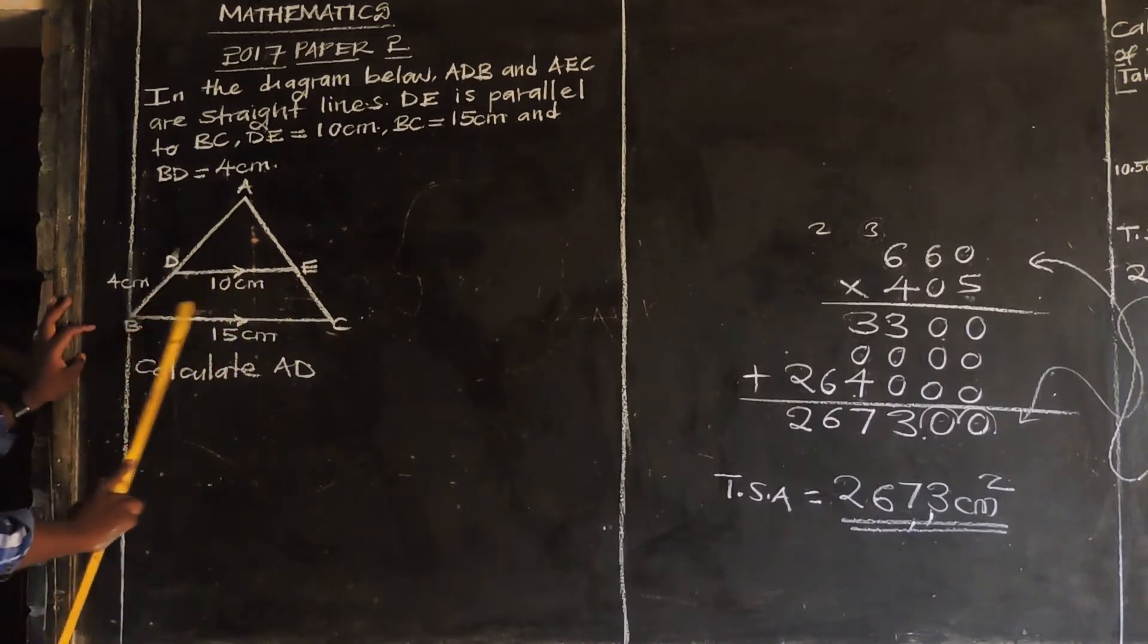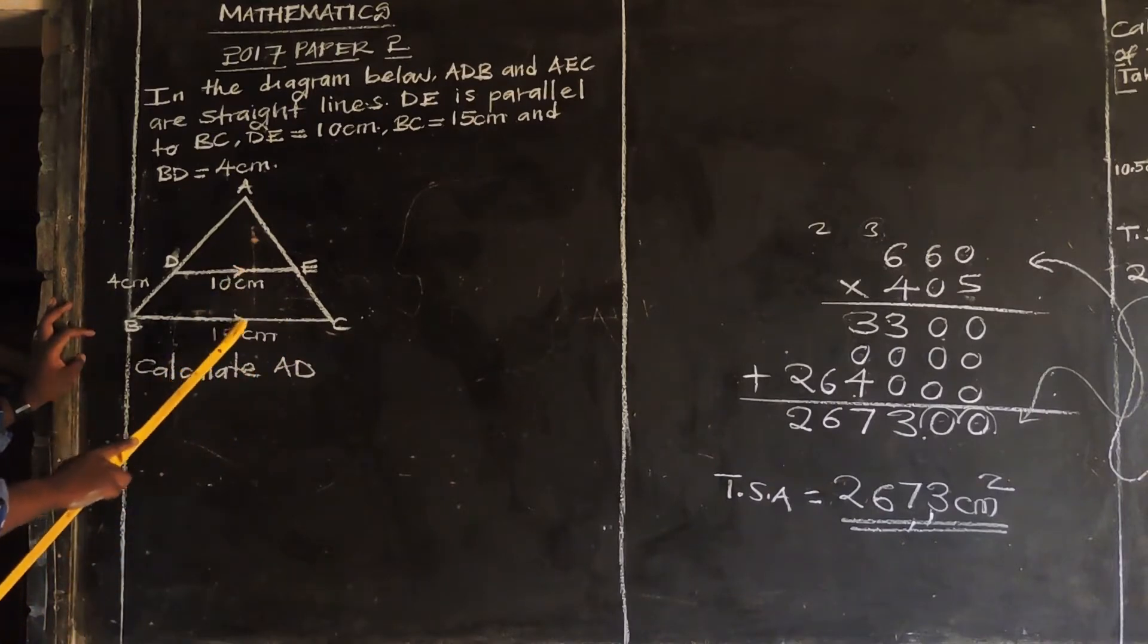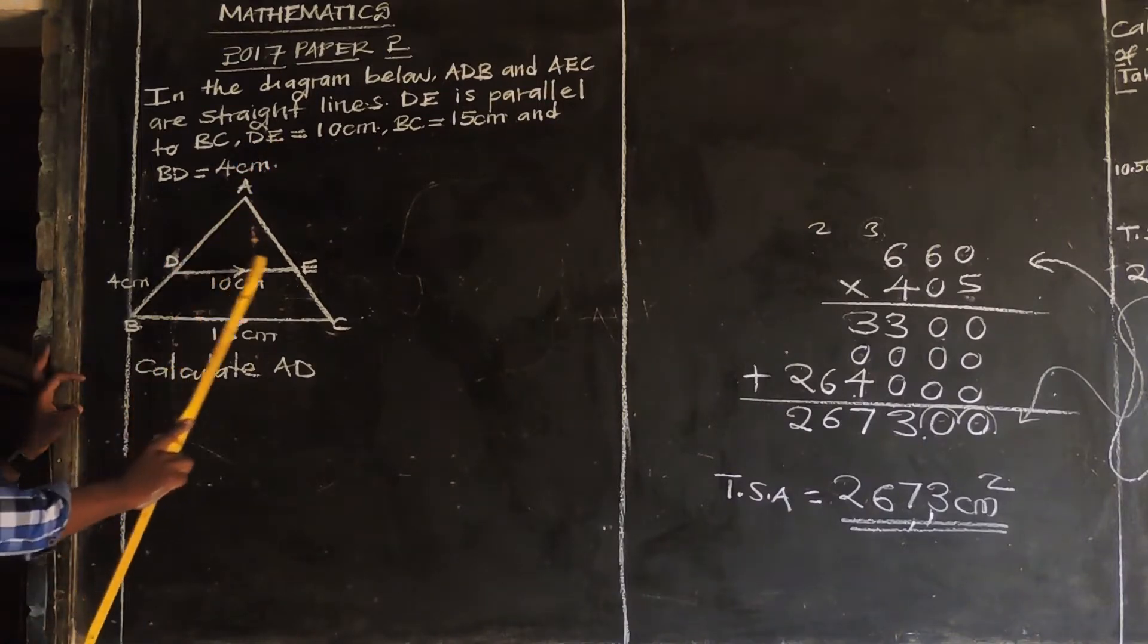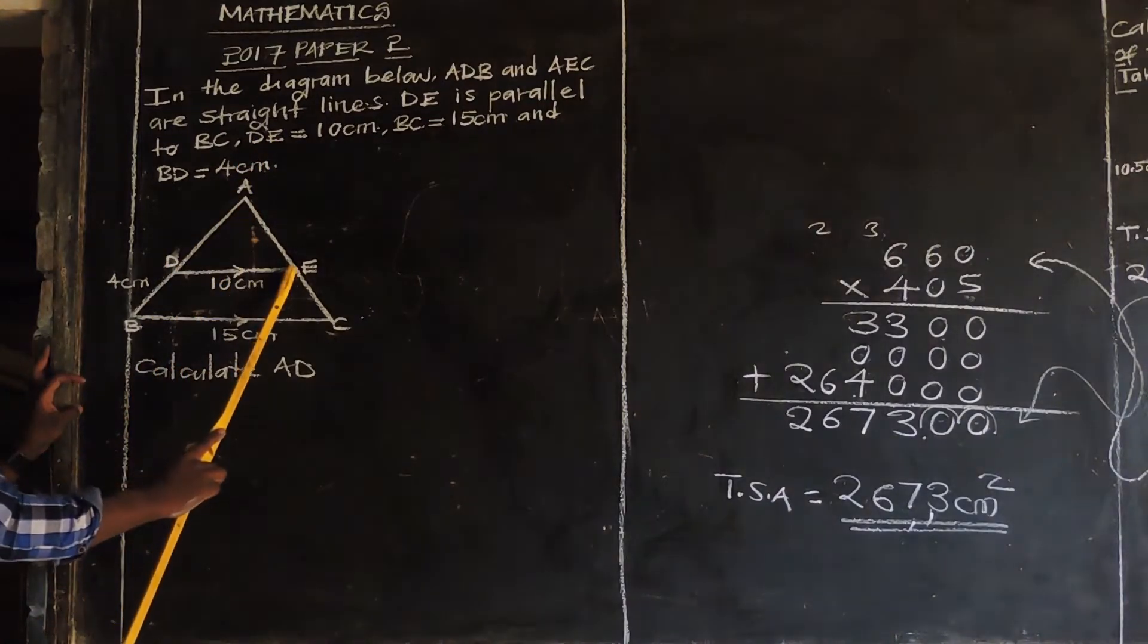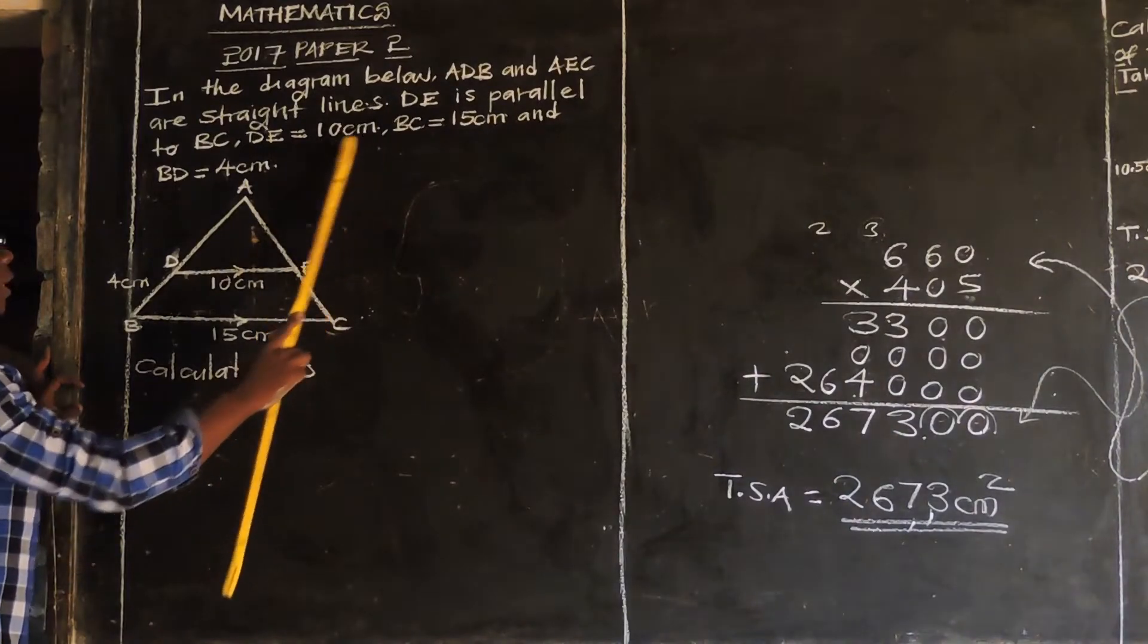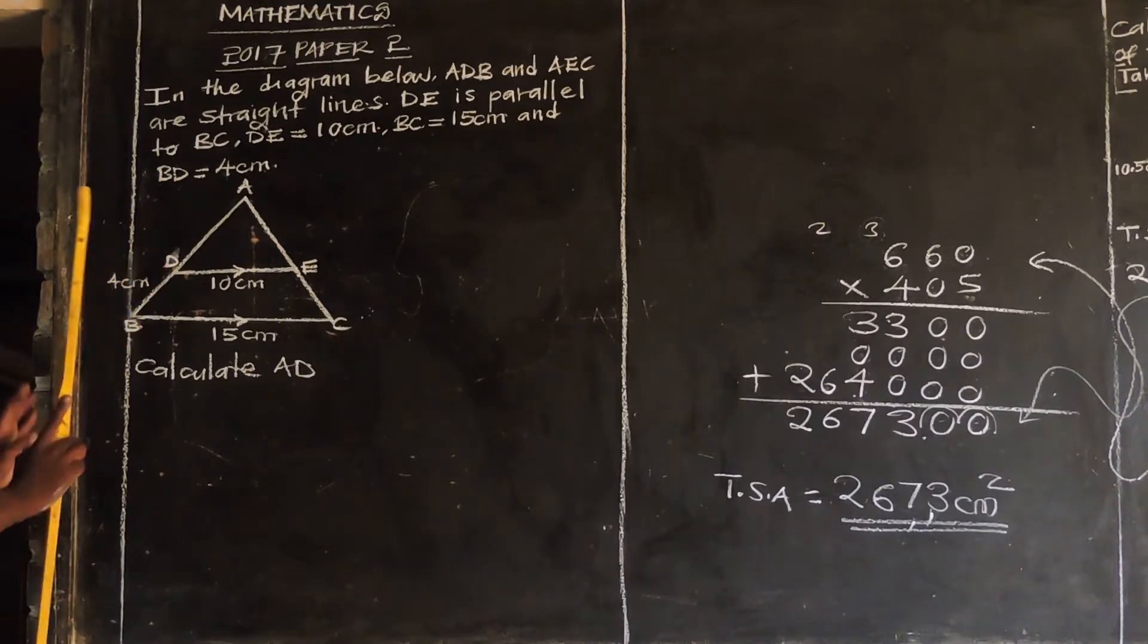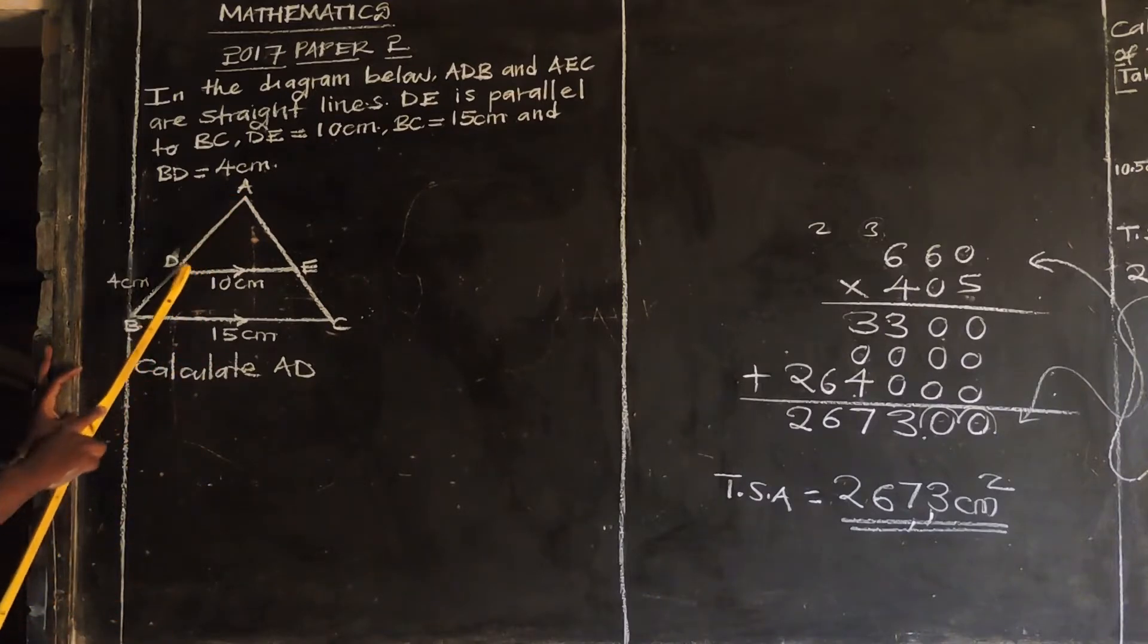So these two are parallel. You can definitely tell by the arrows. These two are parallel. Then it says from D to E, DE is 10 cm, then BC is 15 cm as given, and BD is 4 cm. Then we have been told to calculate what? AD, from A to D. The length from A to D, this is what we have been told to calculate.